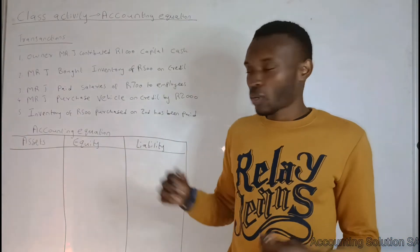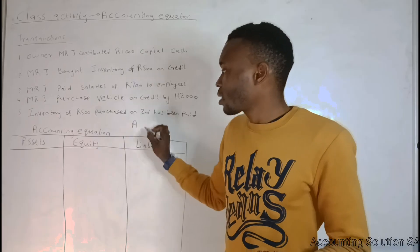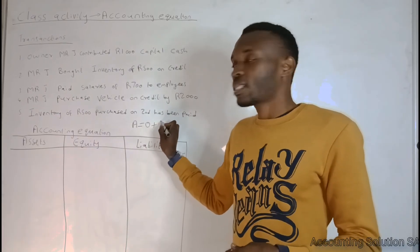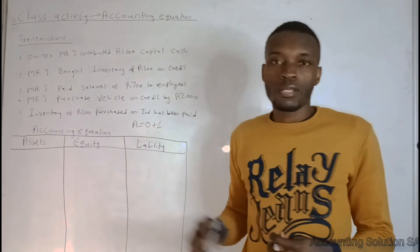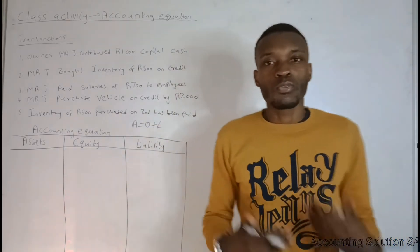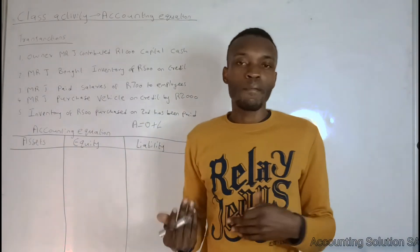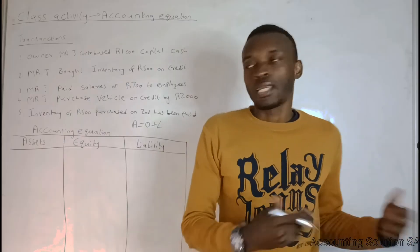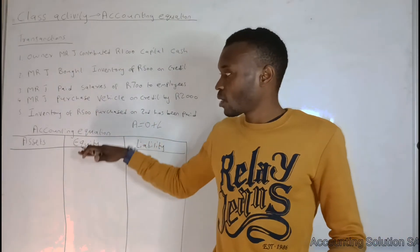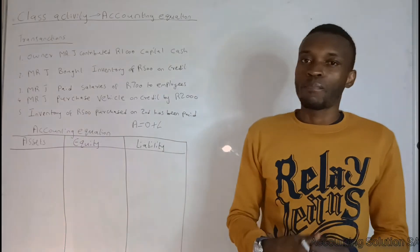You should be familiar with this equation: Assets = Equity + Liability. You have to know this equation because you will still use it when you prepare something like a balance sheet. However, in today's lesson we are going to focus only on the accounting equation.